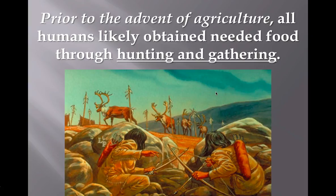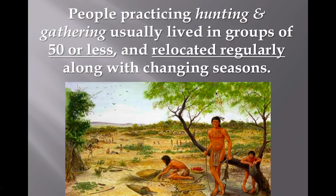Prior to the agricultural revolution, humans hunted and gathered. Pretty stereotypically, men went out hunting live animals, while women stayed around the local area and gathered fruits and vegetables. Usually they stayed in really small groups, usually 50 or less, to avoid competition. Since seasons change and animals change patterns, these people had to frequently move from one place to another based on where the animals were migrating or where plants were in season.